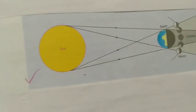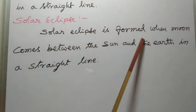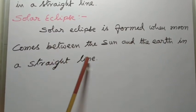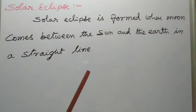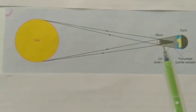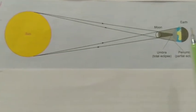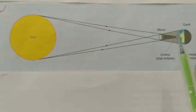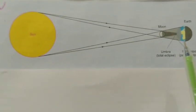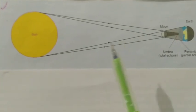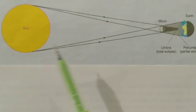Solar eclipse is formed when moon comes between sun and earth in a straight line. Solar eclipse is formed only if all three are in the same straight line.